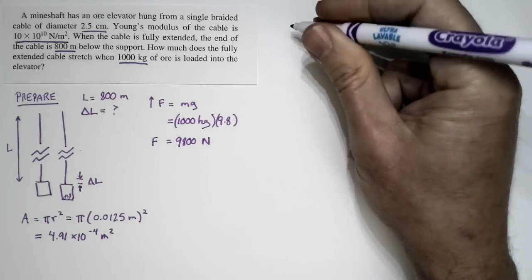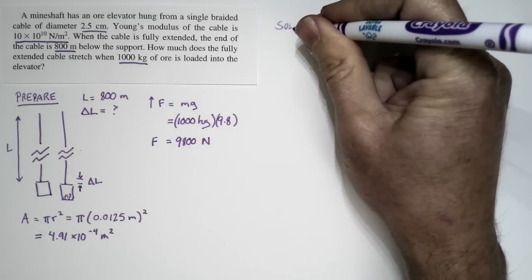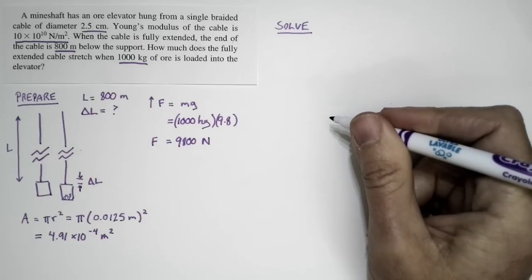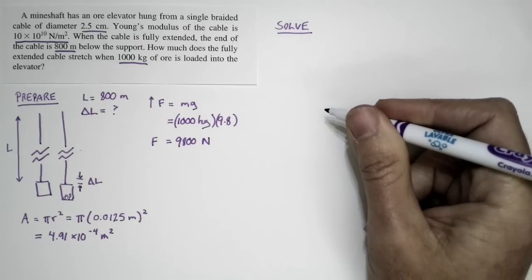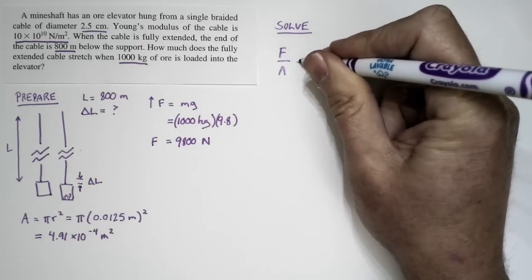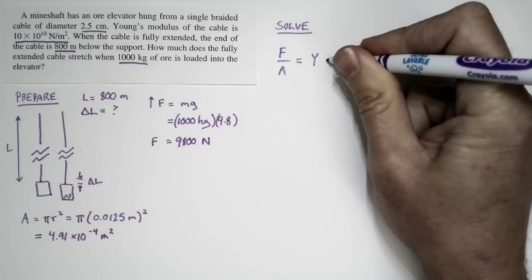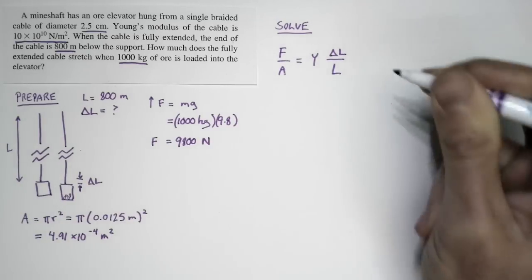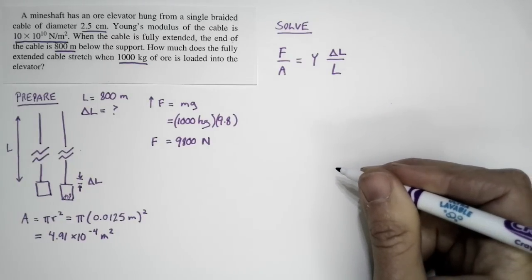This is a classic elasticity problem. When we're doing problems with elasticity—a cable that stretches because of an additional force—we use this relationship: F over A, the force divided by the cross-section area, is equal to Young's modulus times the amount of the stretch divided by the length of the cable. That's our basic relationship.